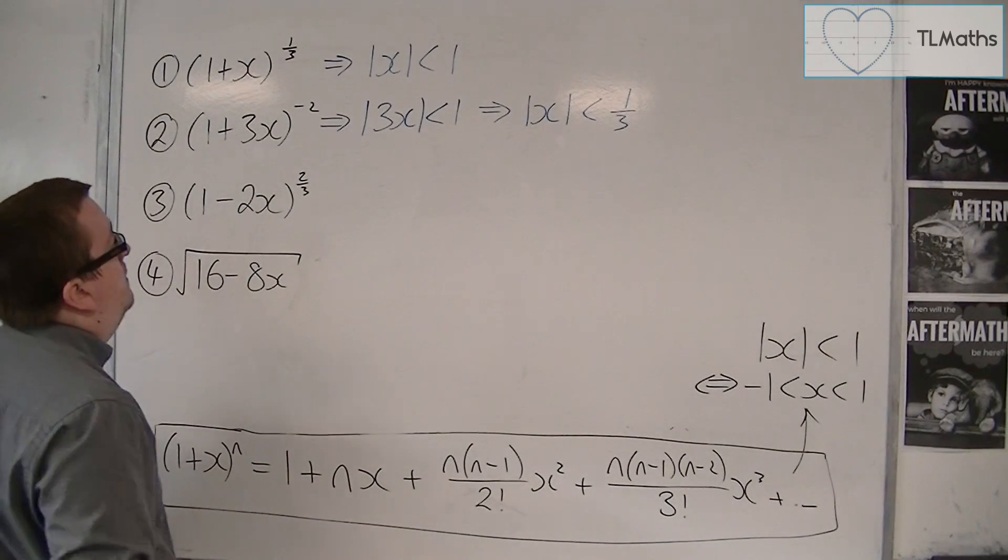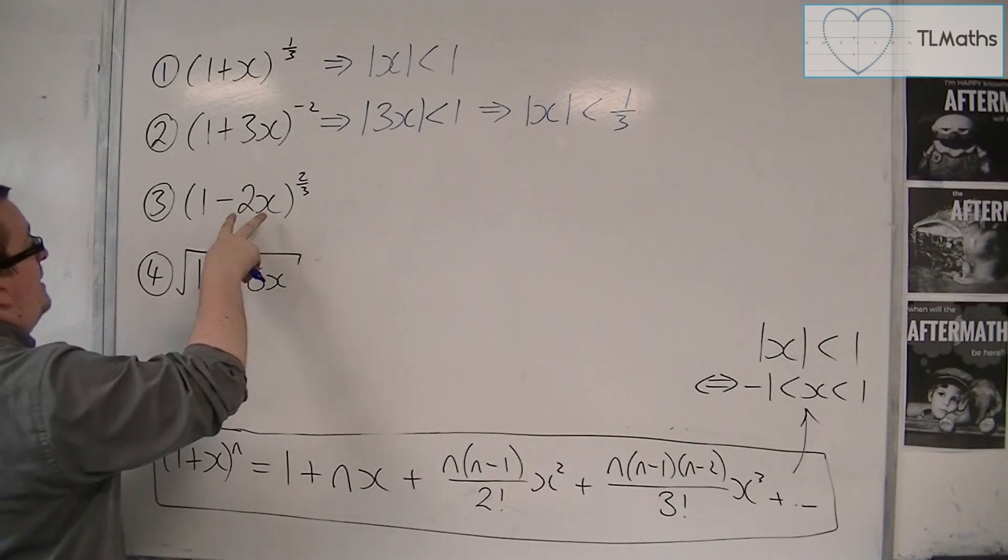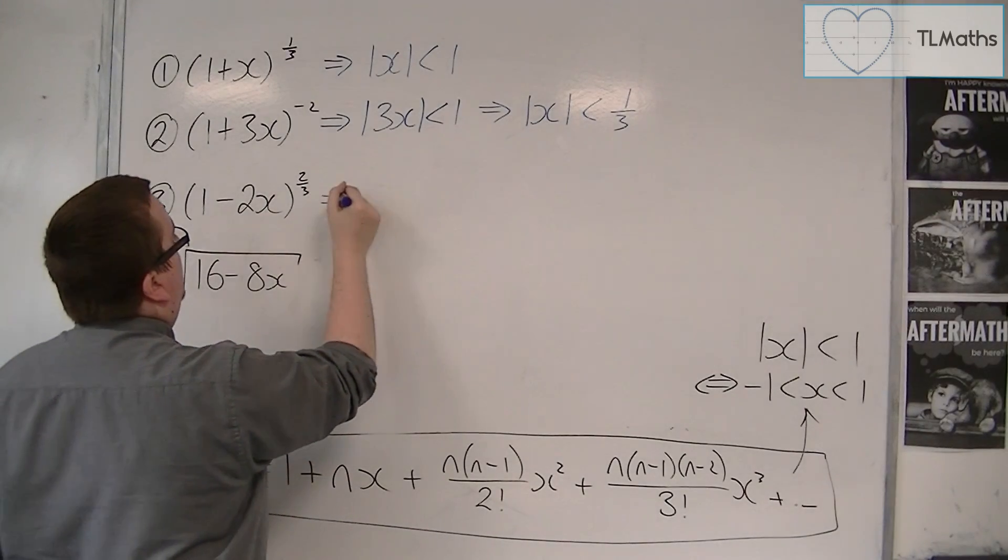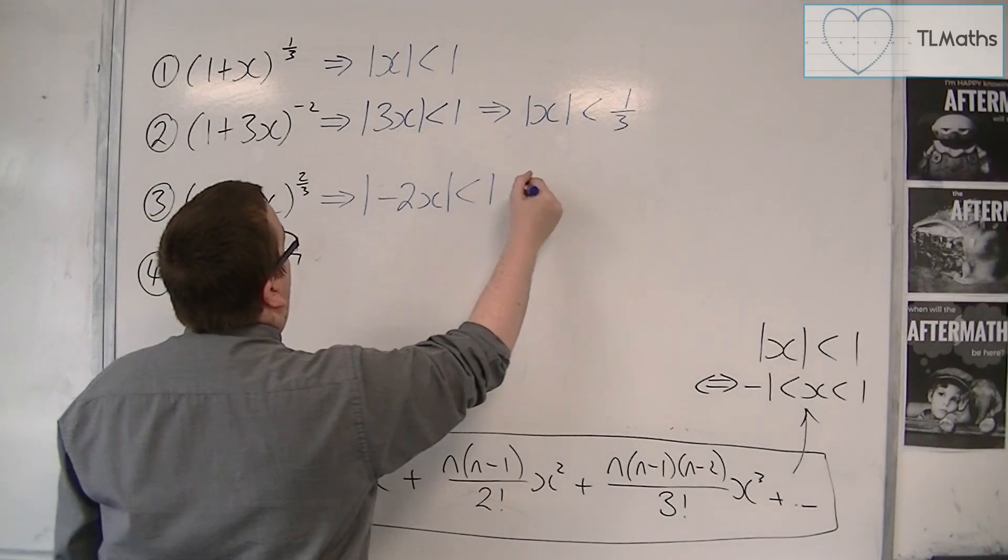For number 3, the 2 thirds doesn't make any difference. The x this time has been replaced with minus 2x. So I can write the modulus of minus 2x is less than 1.